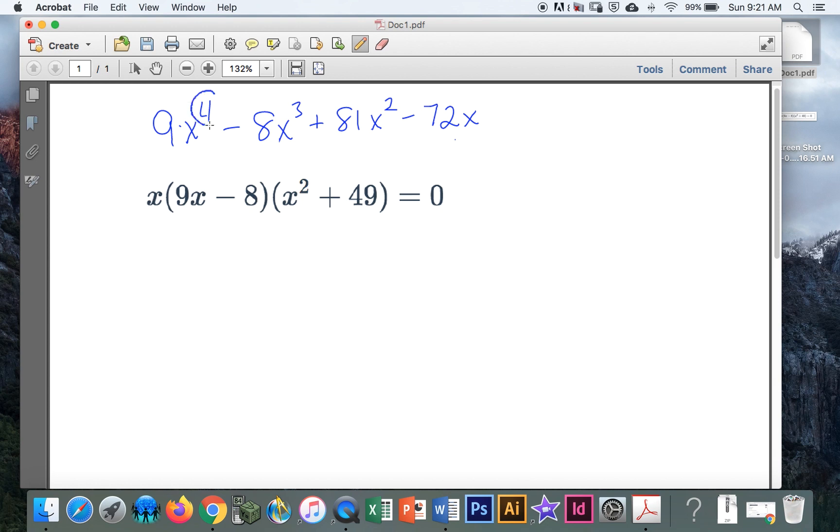This highest exponent is the number of answers that there are. So this factors out. Set it equal to zero. So I have three factors: x, 9x minus 8, and x squared plus 49 equals zero.